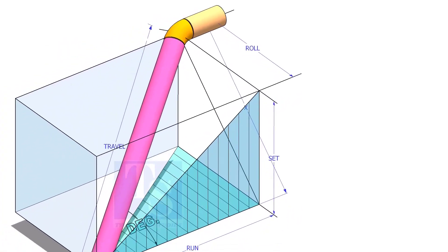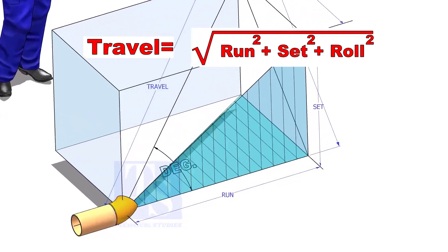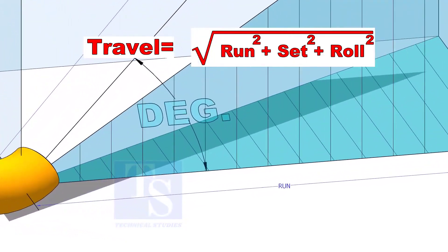The formula to calculate the travel length is root of the sum of the run, set, and roll.